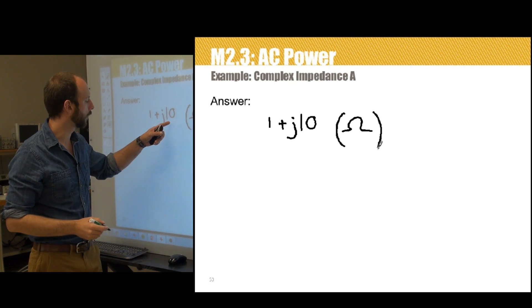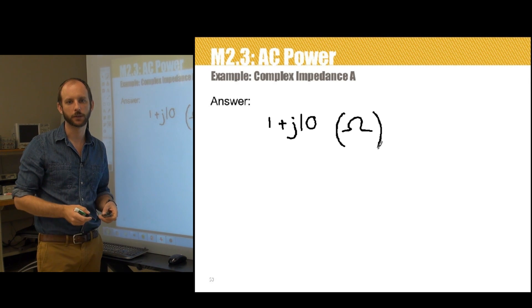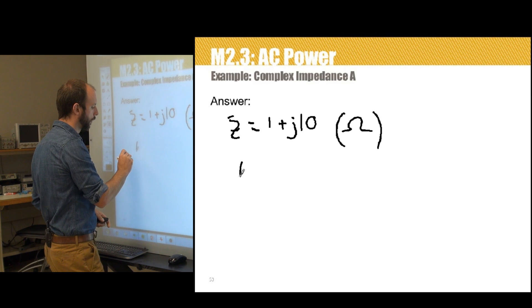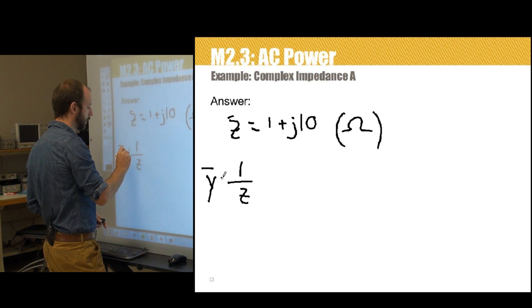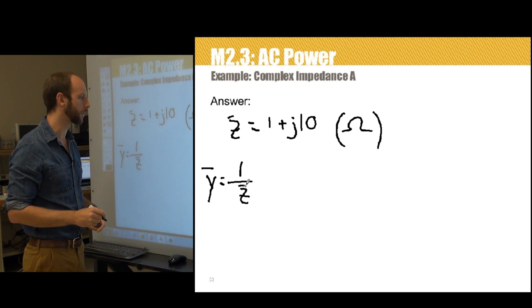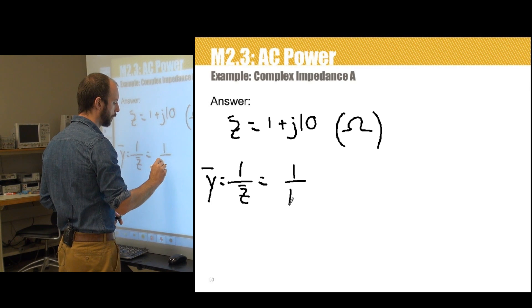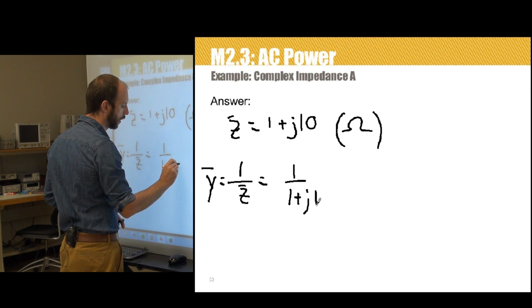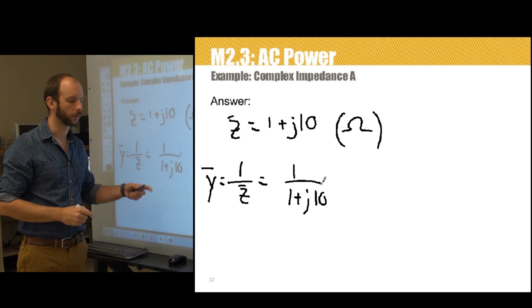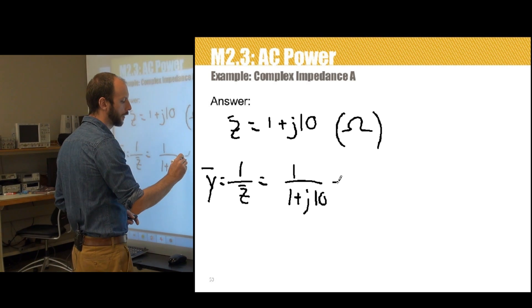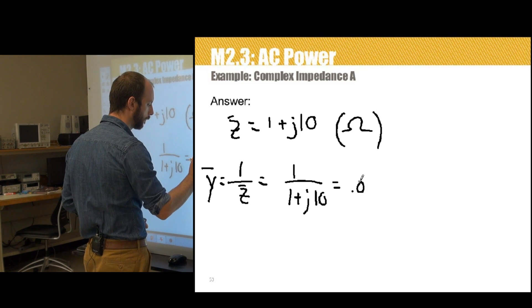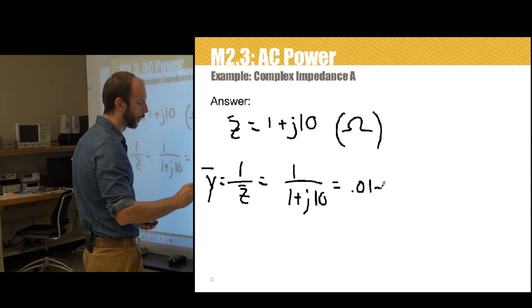We've converted this over to a reactance by multiplying it by j. We can then calculate admittance by saying Y, which is the inverse of the impedance, is just 1 over the vector quantity Z. That's equal to 1 over 1 plus j10. If you don't know the rules for complex division, I encourage you to refresh yourself on those. But if you do that math, it's 0.01 minus j0.1.